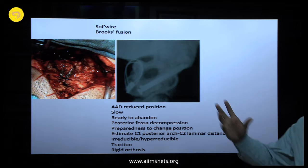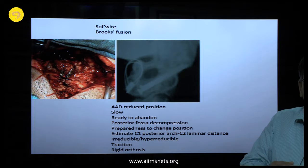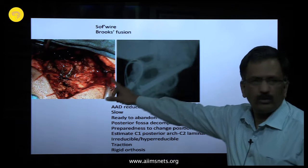Coming to C1-C2 fusion options. We have the classical sublaminar fusion — everybody has done it. This works wonderfully in children and I would still recommend it for very young children, where lateral mass instrumentation is a big challenge. It is simple to just do a sublaminar C1-C2 fusion.